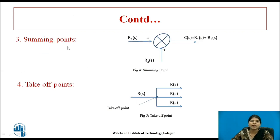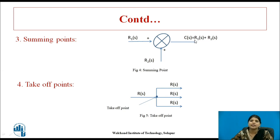The third component is the summing point. One or more than one elements can be added or subtracted at the summing point. Here R1(S) and R2(S) are added directly, so we get C(S) = R1(S) + R2(S). If the sign is negative, then we write R1(S) − R2(S). By default, if there is no sign, it is considered as plus.